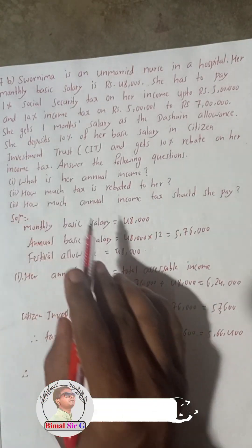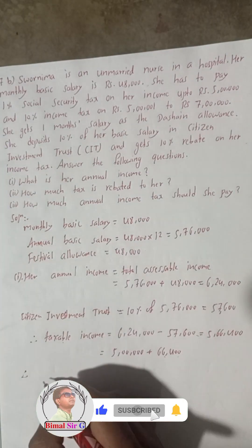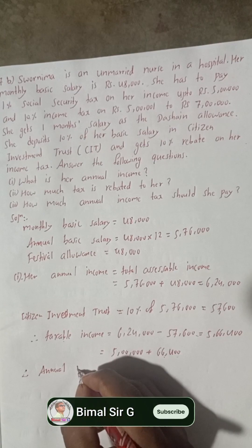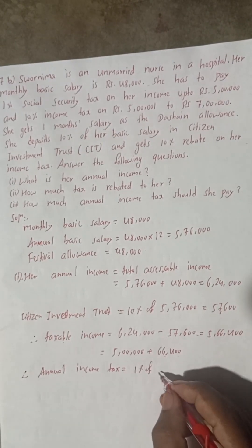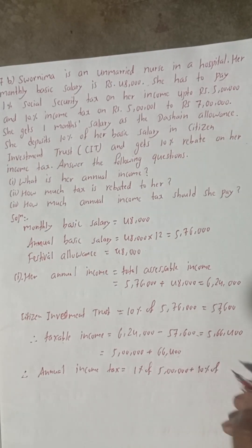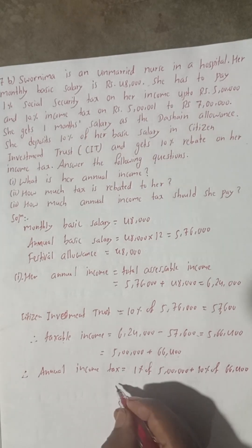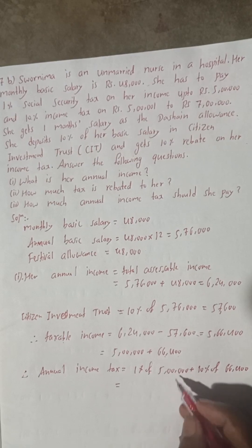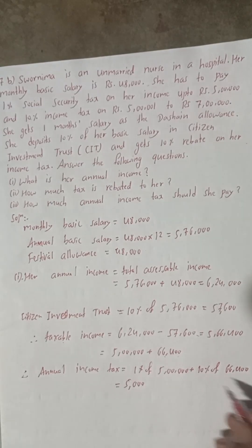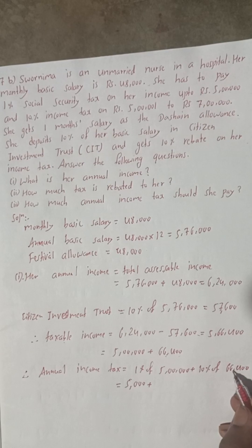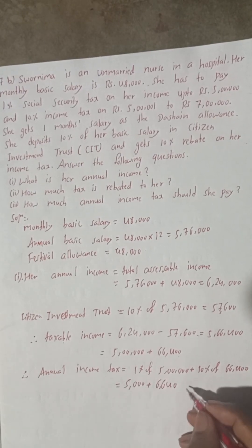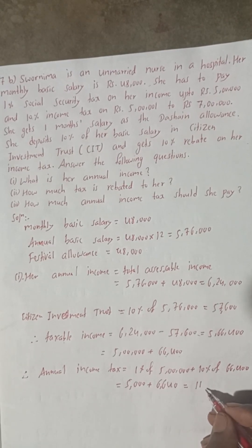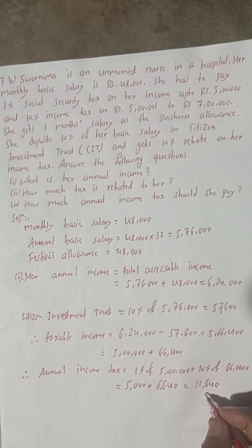Therefore, annual income tax = 1% of Rs. 5,00,000 + 10% of Rs. 66,400 = Rs. 5,000 + Rs. 6,640 = Rs. 11,640. So the total annual income tax before rebate is Rs. 11,640.